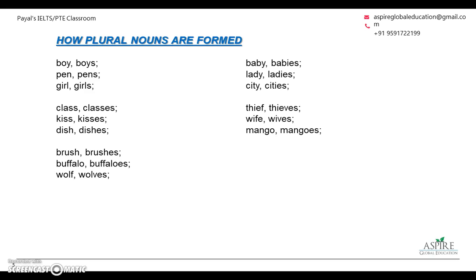Now let's talk about plural nouns. In our previous lesson we went through countable nouns, which have a plural form. Most countable nouns can be changed into plural form by simply adding an 's' — like boy/boys, pen/pens, girl/girls. However, you have to be 100% sure, because there are a few words where just adding an 's' won't work and you may make a spelling mistake.